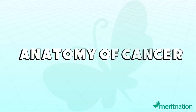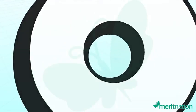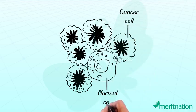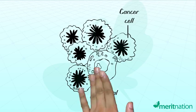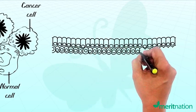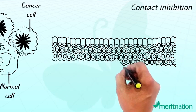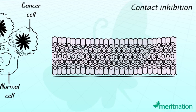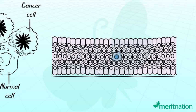At the simplest level, cancer cells are cells that have lost the ability to follow the normal control that the body exerts on all cells. Normal cells have the ability of contact inhibition, which means stoppage of growth on coming in contact with other cells. But cancer cells lose this property.